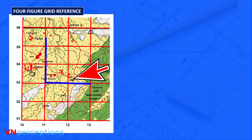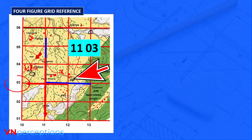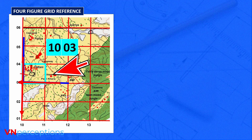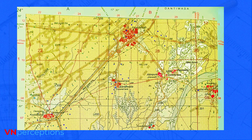Using the letter L method: the vertical line points to 11 and the horizontal line points to 03, so the four-figure grid reference is 1103. Another example: the vertical line points to 10 and the horizontal line points to 03, giving the answer 1003. Another example: the vertical line points to 23 and the horizontal line points to 10, so the answer is 2310.